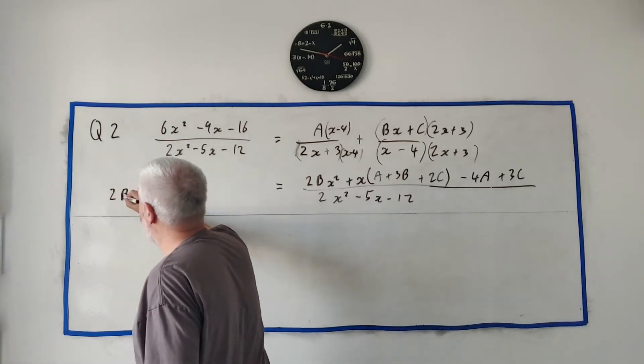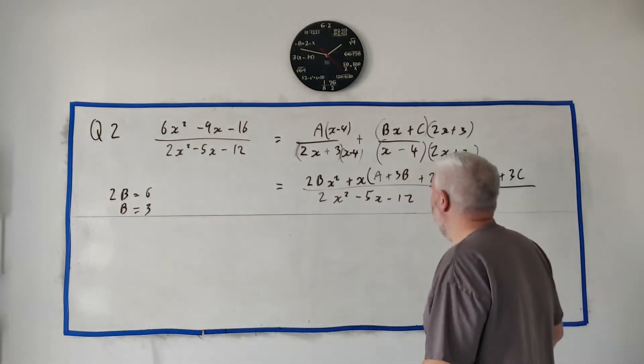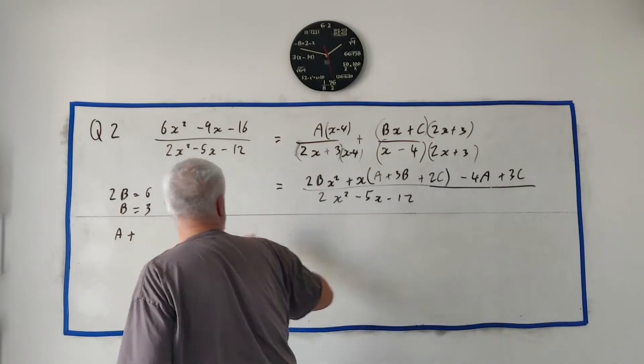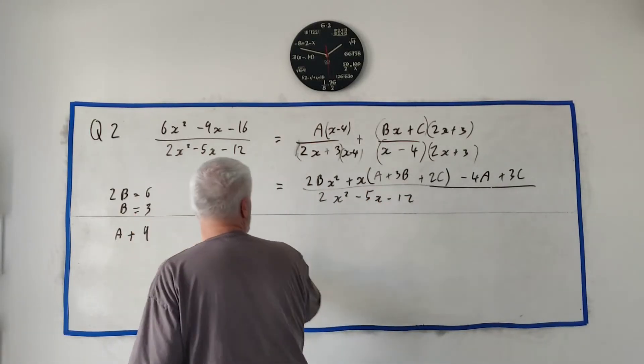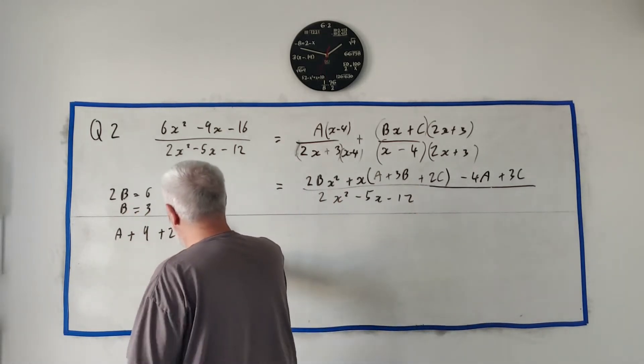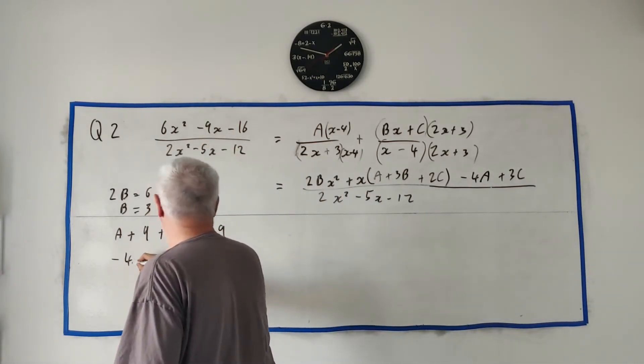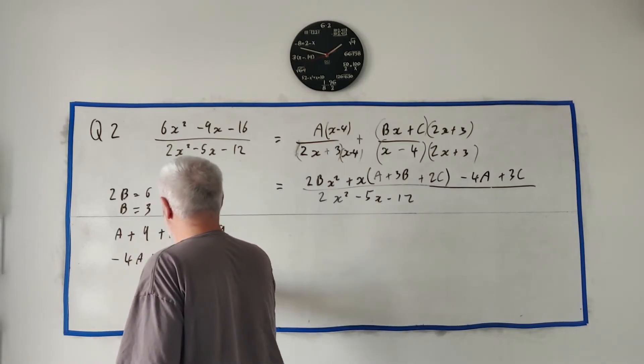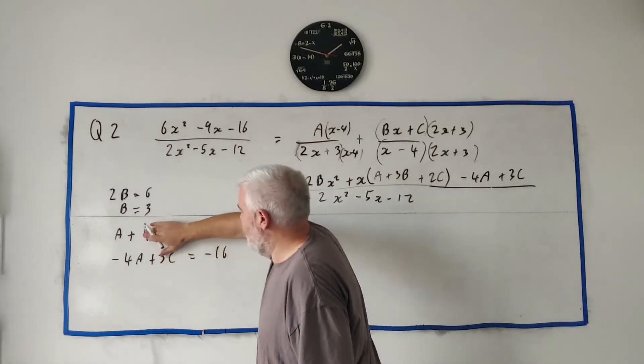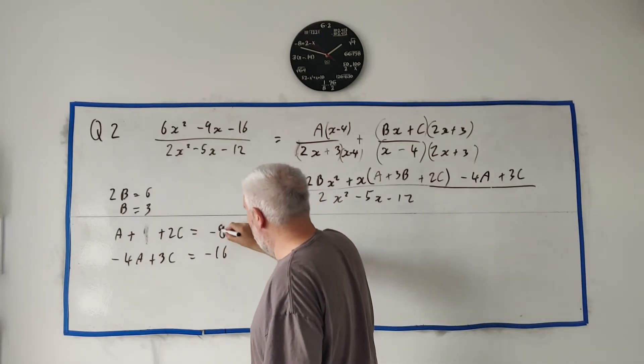We get 2B is equal 6, and that's just B is equal 3. That's easy. We also then get this. A plus 3B. Instead of 3B, I'll write 9. A plus 9. 3B is 9. Plus 2C. That must equal minus 9. And then also we would get minus 4A plus 3C must equal minus 16.